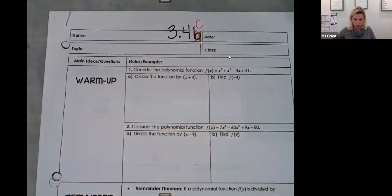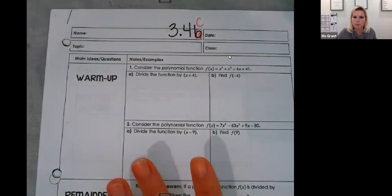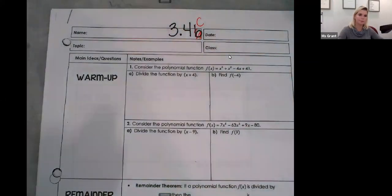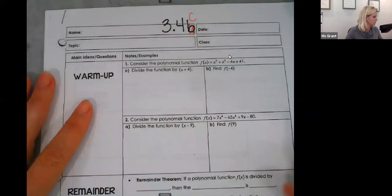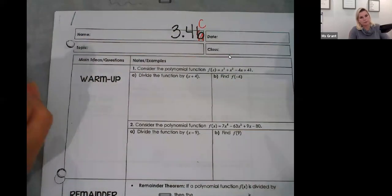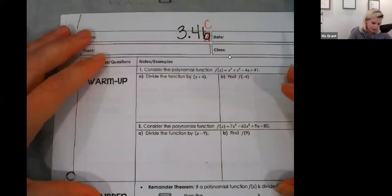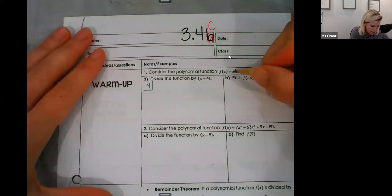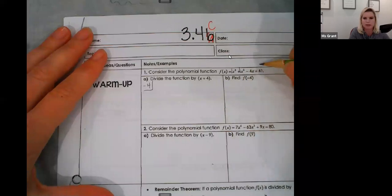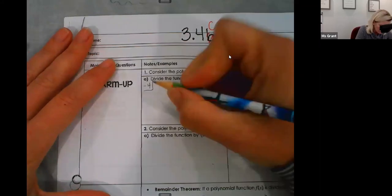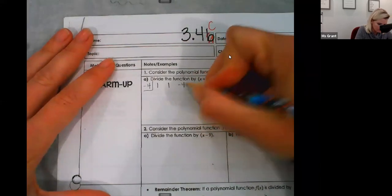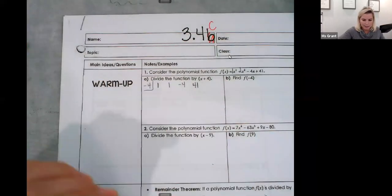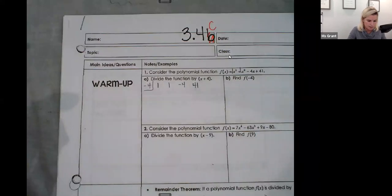First I want to practice synthetic division. If I think that x plus four is a factor, that means I'm going to divide it synthetically, and I put the zero — negative four — there. Then I put my terms: one x³ plus one x² minus four x plus 41. Coefficients: one, one, negative four, 41. A student came into student support on Friday and I used colors and they really benefited from synthetic division, so I want to do that for you as well.